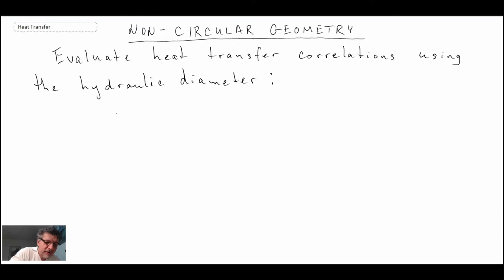The definition of the hydraulic diameter, first of all, has the symbol capital D_H. It is four times the cross-sectional area divided by the perimeter. So with that, let's take a look at a couple of common shapes that we may encounter.